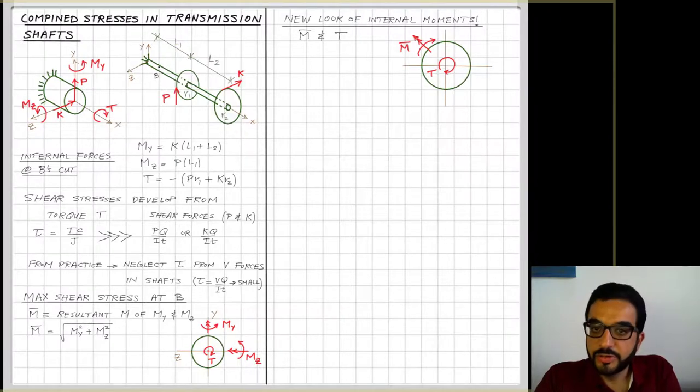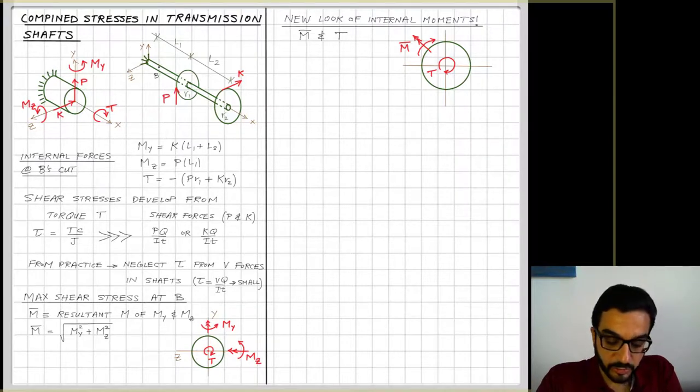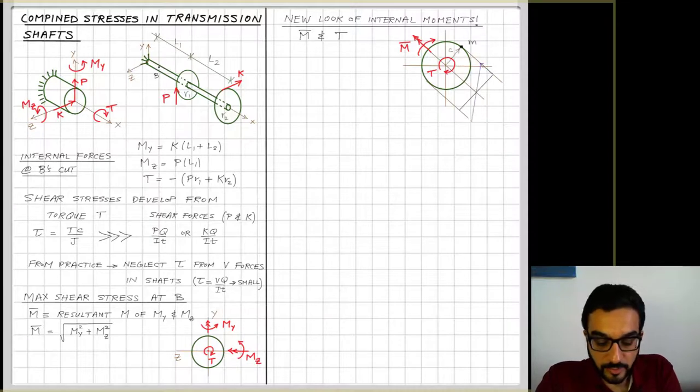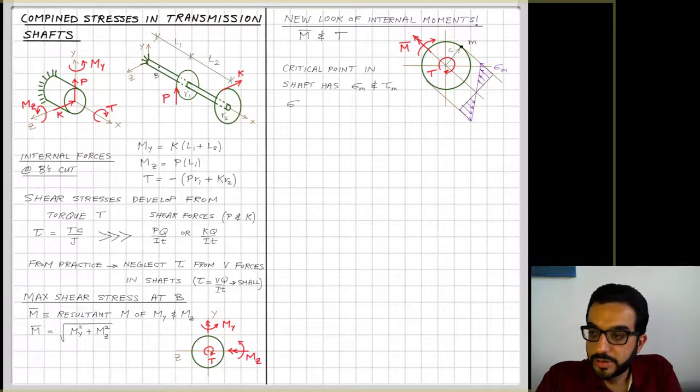So this is kind of reducing my representation of internal forces by first neglecting shear stress from shear forces, combining the bending moments into one single bending moment now around its own kind of axis or neutral axis of the section. And now I can follow the normal stress developed by this resultant moment M̄.